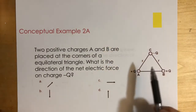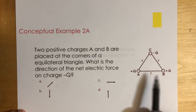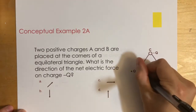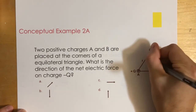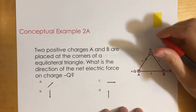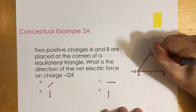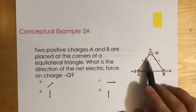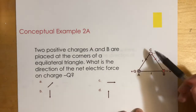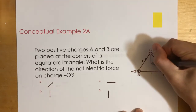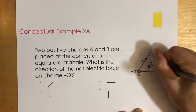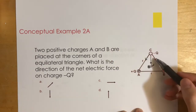Let's look at this next example. Two positive charges A and B are placed at corners of an equilateral triangle. What is the direction of the net electric force on the negative charge at the third corner? Each positive charge attracts the negative charge: one pulls it diagonally to the left and down, the other pulls it diagonally to the right and down. The left-right components cancel out, but the downward components add together, so the net force points straight downward.